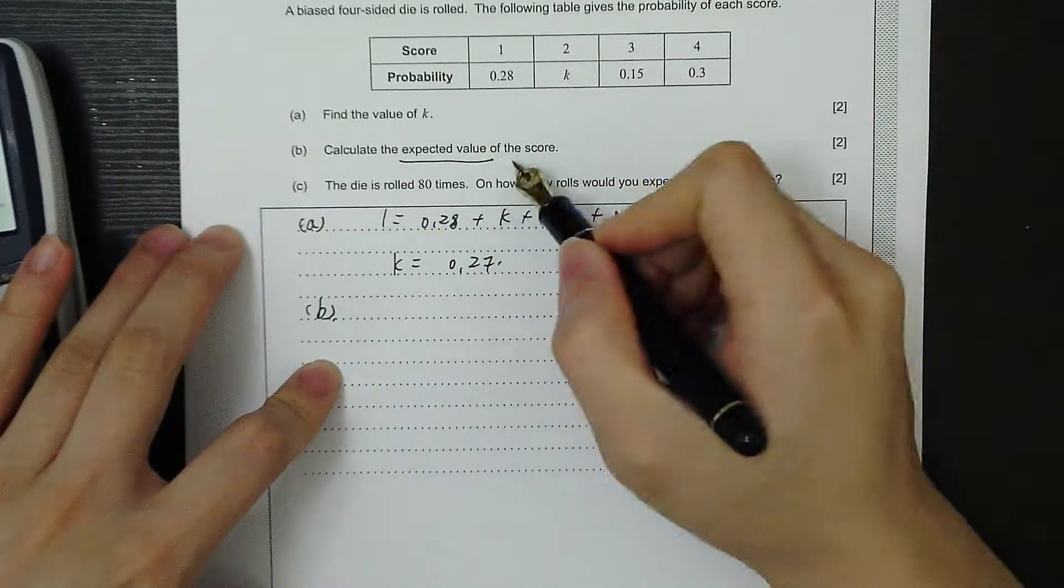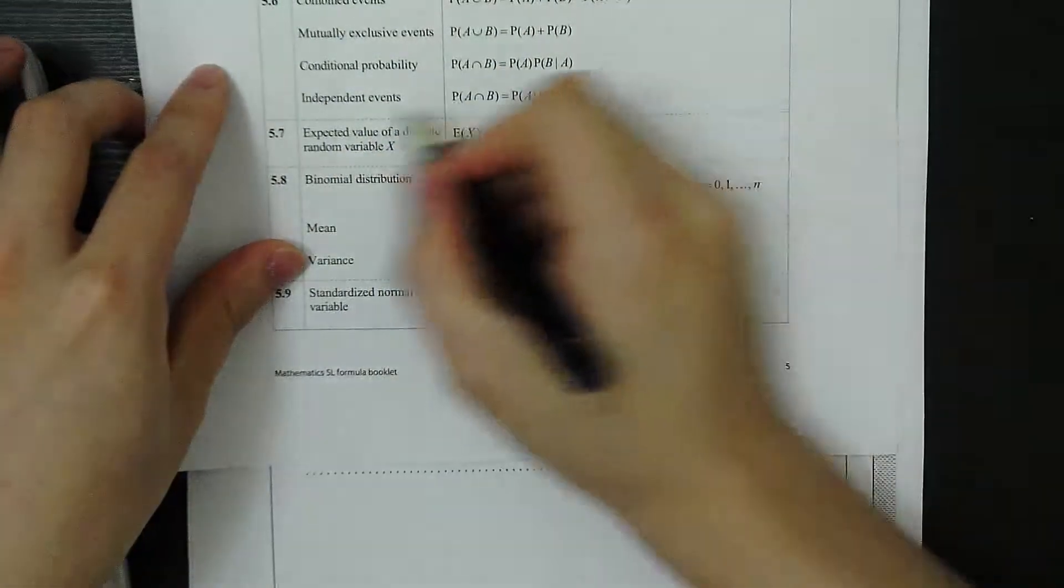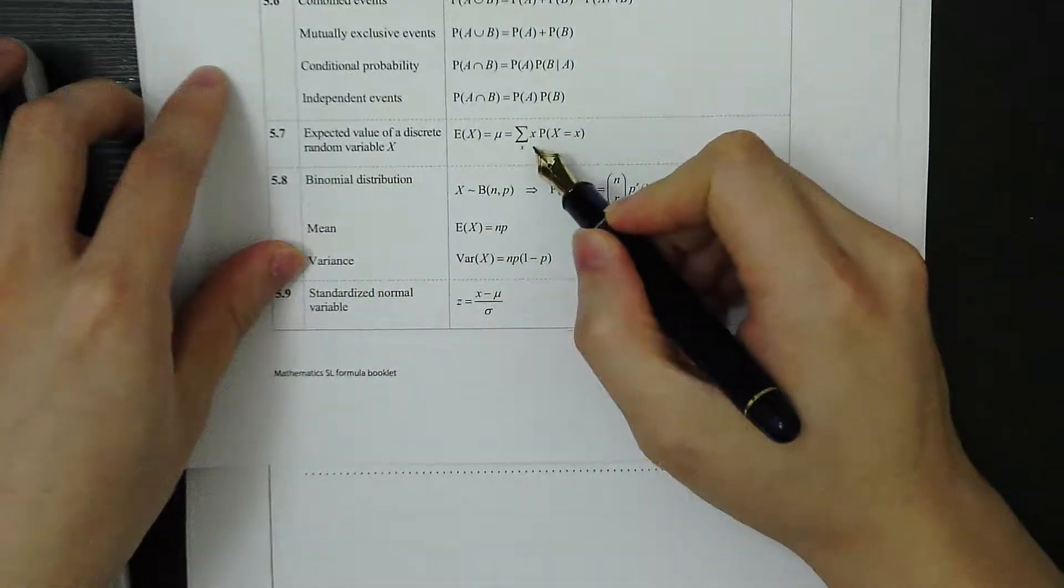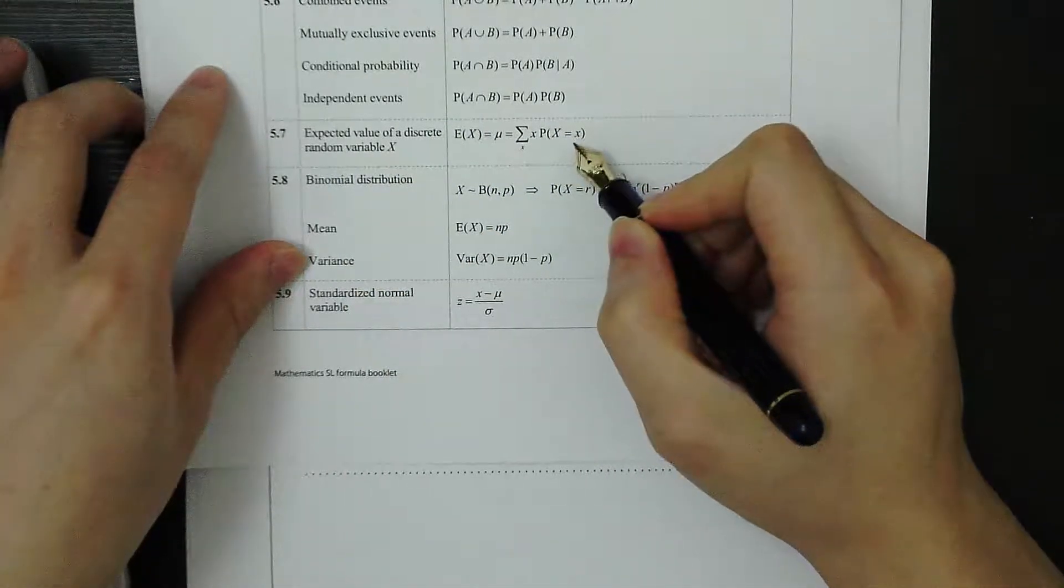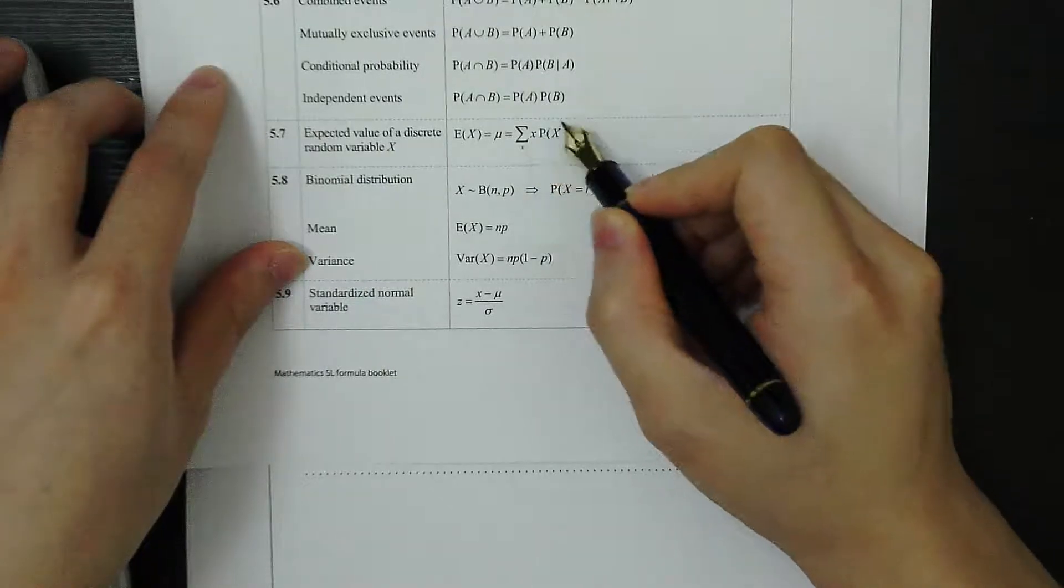B, calculate the expected value for the score. The formula for expected value can be found from the formula here. X times the probability for X, and then sum of all the values.